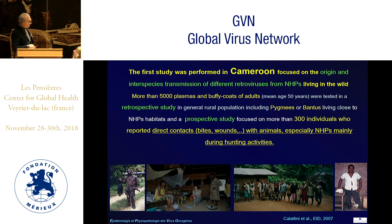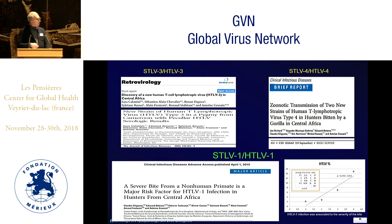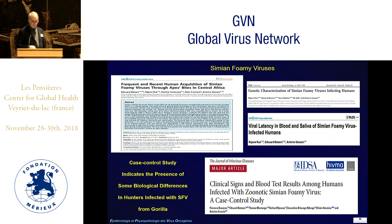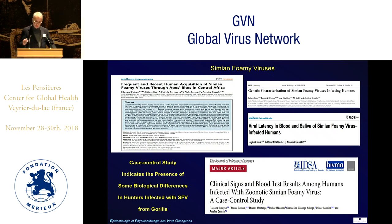The first study was done in Cameroon. We focused on a large population of about 5,000 persons — either pygmies or Bantus — and especially on 300 individuals who reported direct contact, particularly bites from animals: hunters beaten by gorillas, chimpanzees, or small monkeys. This led to the discovery of HTLV-3, and also demonstrated that HTLV-4 can be transmitted from gorillas, and that a severe bite from a non-human primate is a major risk factor for HTLV-1 infection. We could clearly see that HTLV-1 infection was associated with the severity of bites. We also described frequent acquisition of simian foamy viruses in humans and characterized the virus with a case-control study showing biological differences like anemia.